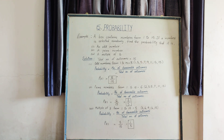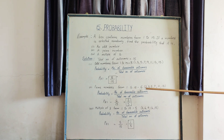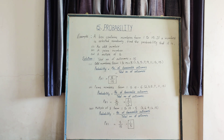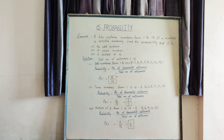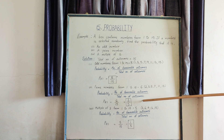Next, to find the probability of a prime number, we first identify the prime numbers from 1 to 15. They are: 2, 3, 5, 7, 11, and 13 — so there are 6 outcomes. Using the formula, probability equals number of favorable outcomes upon total number of outcomes, so the probability that a selected number is prime equals 6 upon 15, which is equal to 3 upon 5.